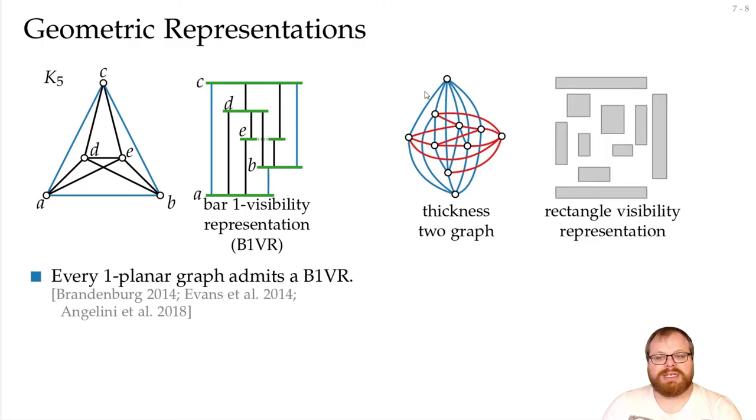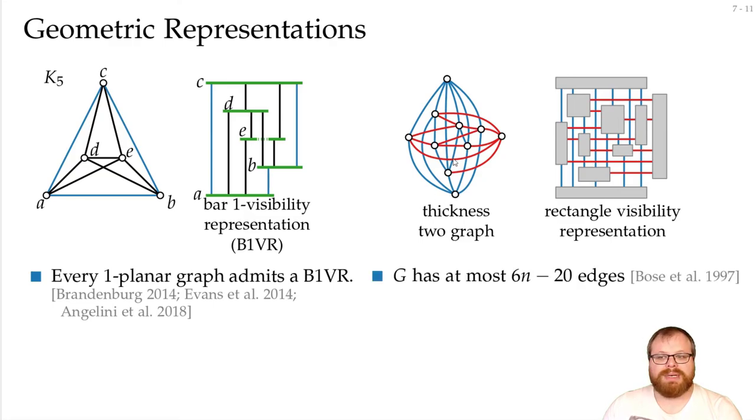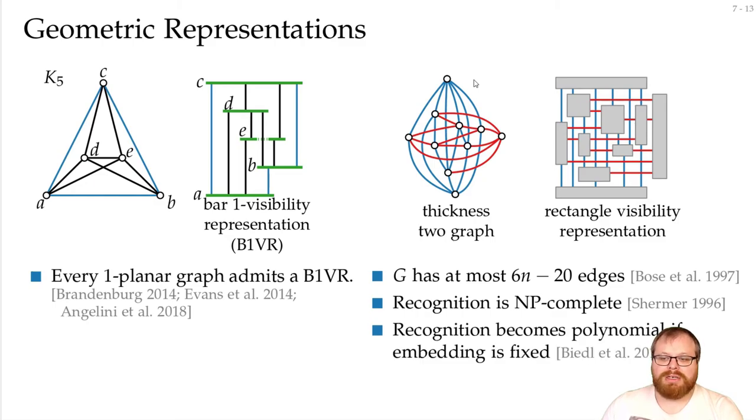Then we could use rectangle visibility representation, and in such a way that the vertical visibilities are blue, and the horizontal ones are red. Graphs that admit such a layout have at most 6n minus 20 edges, and it's NP-hard to recognize them. On the other hand, we can do it in polynomial time if the embedding of the input graph is fixed.